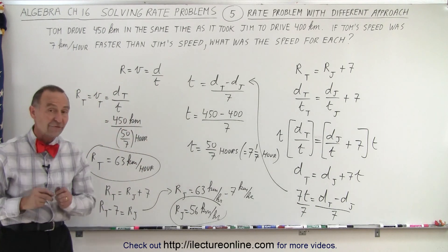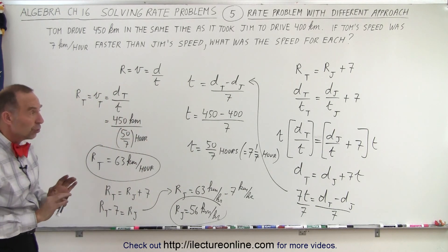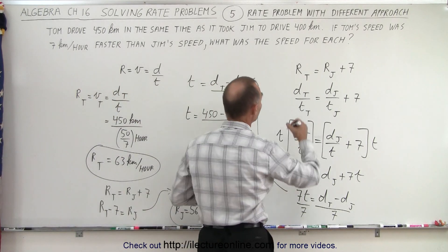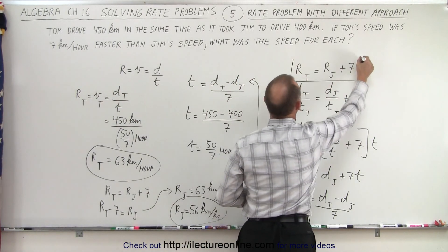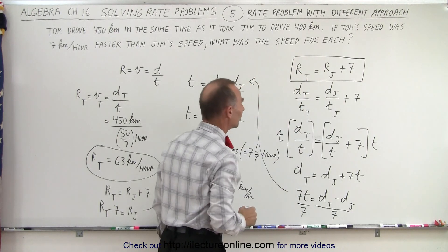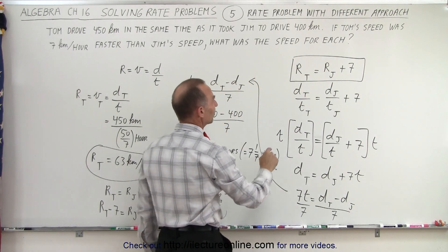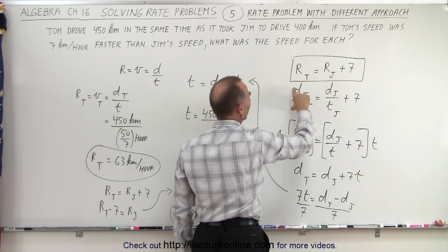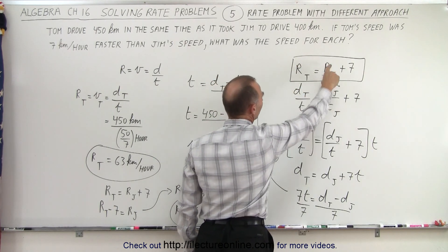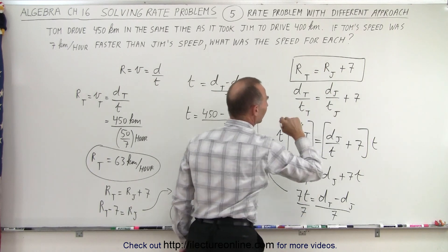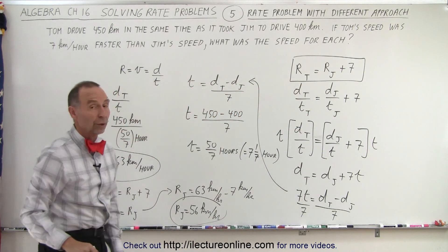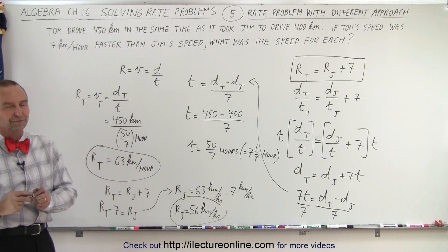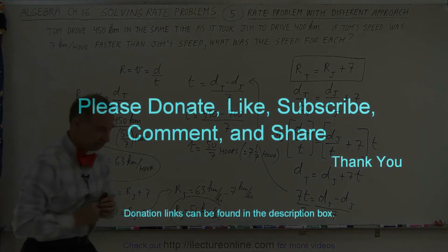And that is how we find the rate for both. Notice it's a different approach. Here we simply had a starting equation where we're given the relative rate of one relative to the other, but we were not given the time. So we say that the distance divided by time, defined as the rate of one, equals the distance divided by time of the other plus 7. Then we solve that equation for the one unknown, which was the time. And that is how it's done. Thank you.